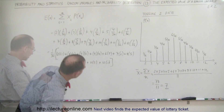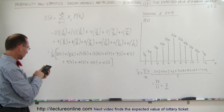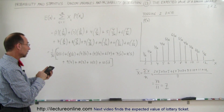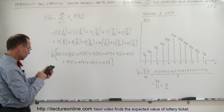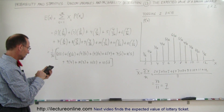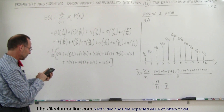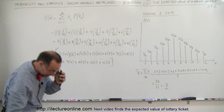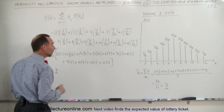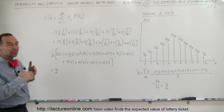So we get 2 plus 6 plus 12 plus 20 plus 30 plus 42 plus 40 plus 36 plus 30 plus 22 plus 12. Take that, divide it by 36, and we get exactly 7 — which is what I would expect.